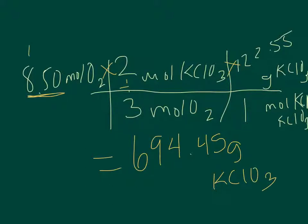In my starting number, I have three significant figures. So in my final answer, I can have three significant figures. After the 4, my next number is less than 5, so I round down to 694 grams of potassium chlorate.